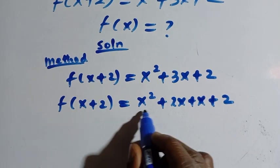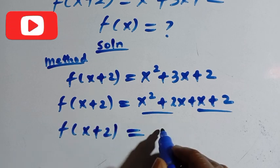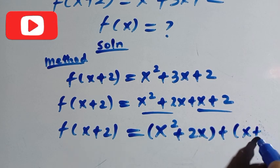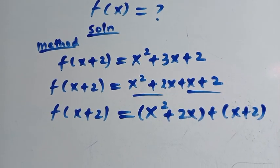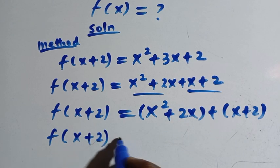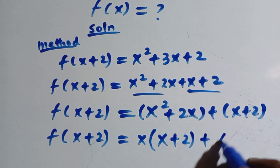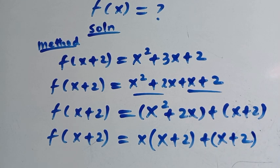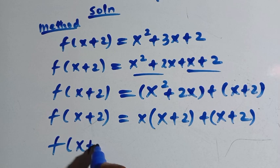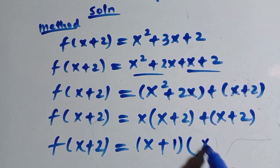So let's try to group them. So when we group this one and group this one, we have f of x plus 2 equals x squared plus 2x, plus x plus 2. So after the successful grouping, we have to factor out what is common. So what is common here is x. By taking out x, we have x plus 2 plus and also x plus 2. So when we combine them together, we have f of x plus 2 equals x plus 1 times x plus 2.